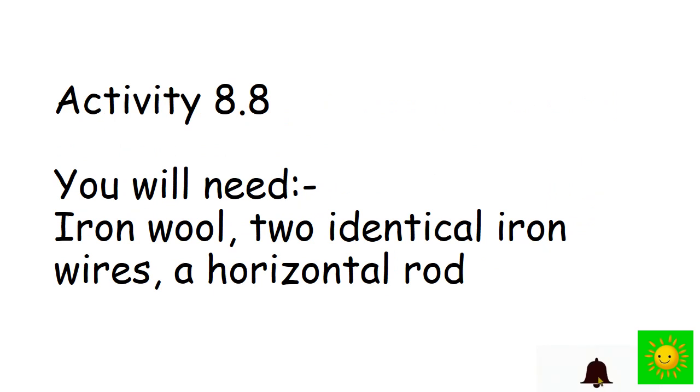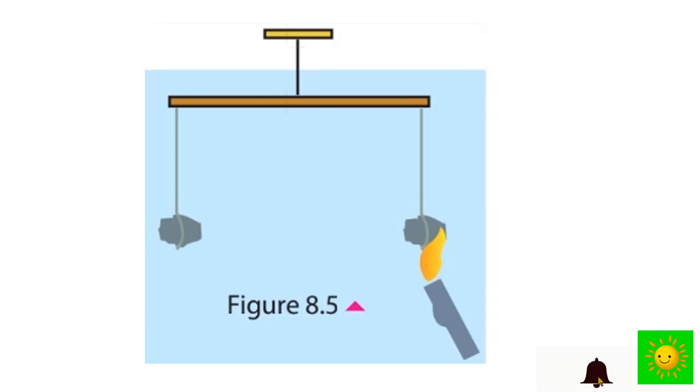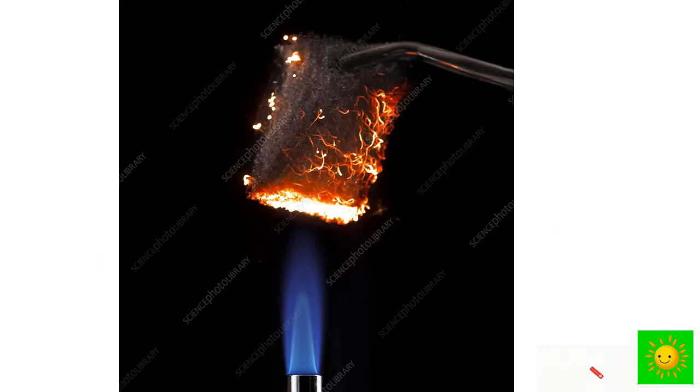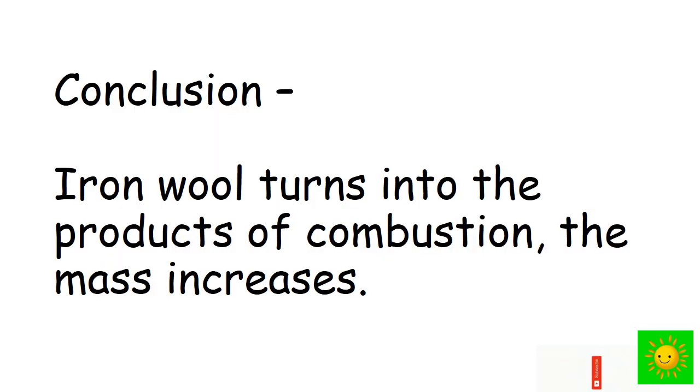Let's do this activity to inquire it. We need iron wool, two identical iron wires, and a horizontal rod. Take two equal masses of iron wool and lump them loosely. Using two iron wires, tie them to a horizontal rod as shown in the figure. Suspend the rod on the support of the balance horizontally. Light one lump of iron wool. Iron wool burns giving reddish sparks. At the same time, the side with the burned wool moves down. Iron wool turns into the product of combustion. The mass increases.